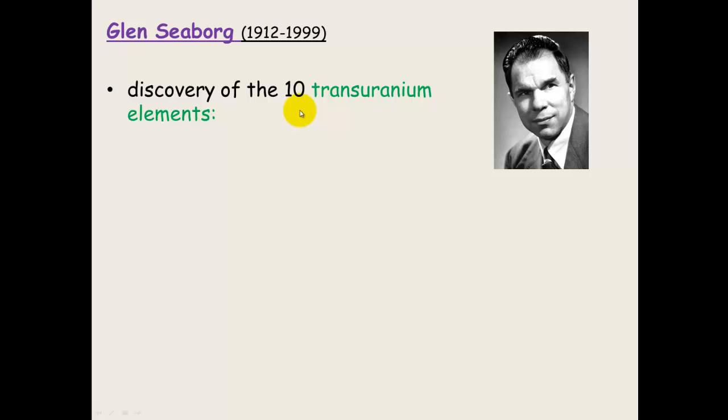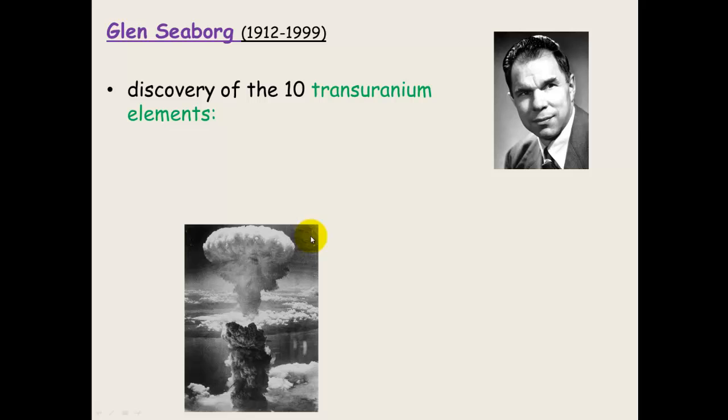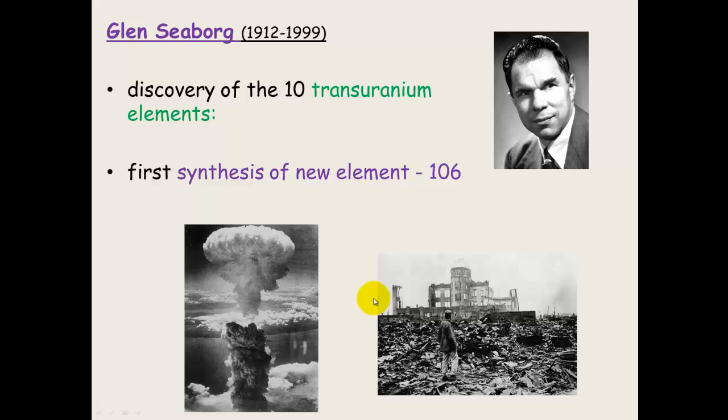Glenn Seaborg. He was the discoverer, with other people as well, of the ten transuranium elements. And this included plutonium and he was one of the members of the team of the Manhattan Project that created the first or developed the first atomic bomb. He actually wrote a letter to Truman asking them to demonstrate the first bomb to the Japanese rather than using it. Unfortunately, as we're all now aware, Truman didn't listen. He also synthesized the very first ever new element which was 106. Seaborg went on to do a lot of really good work with nuclear medicine.